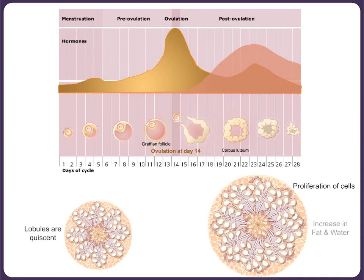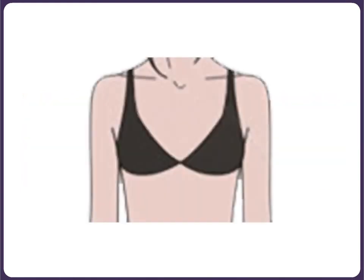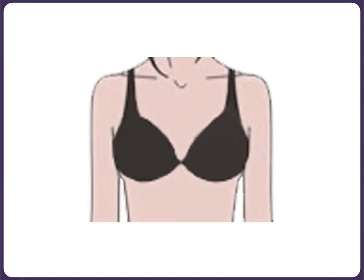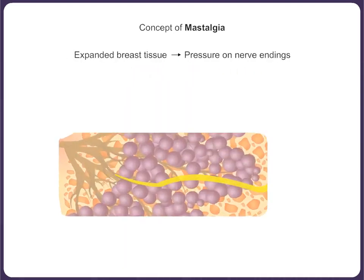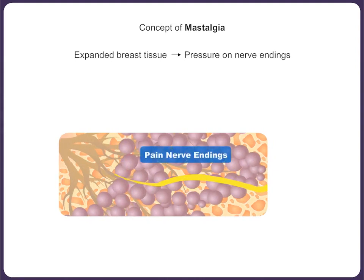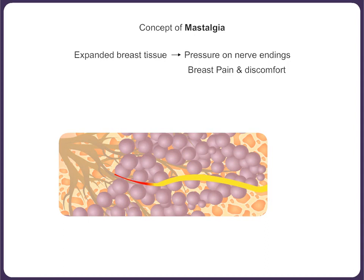These hormones result in proliferation of cells of the ductal lobular epithelium along with an increased number of acini. Moreover, there is an increase in the fat and water content within the breast stroma. The net result of these changes is an increase in breast volume, compelling some ladies to even change their garment to a larger size. The increase in breast volume causes pressure on the pain nerve endings, resulting in breast pain or discomfort, which is called nostalgia.